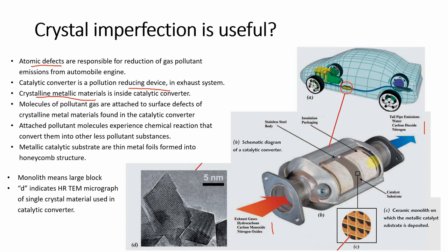The catalytic converter is a pollution-reducing device in the exhaust system. Inside it there is insulation packing and a catalytic substrate. A ceramic monolith — meaning a ceramic block — is present on which the metallic catalyst substrate is deposited. This substrate can be thin metallic foils. These foils contain imperfections, and when poisonous gases pass through, their molecules attach to these imperfections where a chemical reaction converts them into less poisonous gases, which then exit the exhaust system.